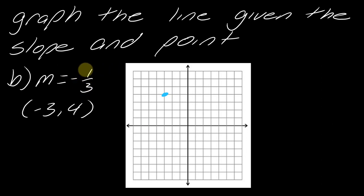Counting from my point: I go down one, then to the right three. I do that one more time — down one and to the right three. Now I've got three points to make a nice straight line and we're good to go.